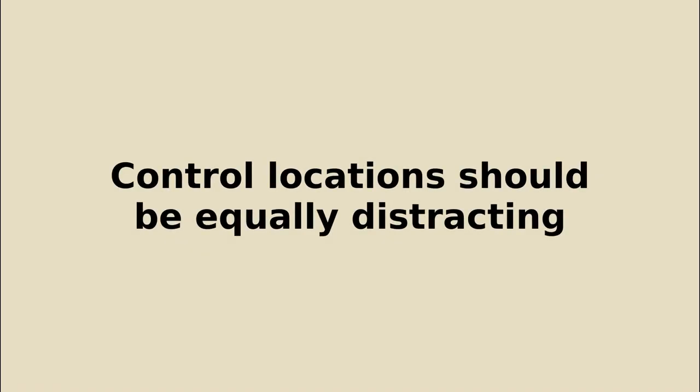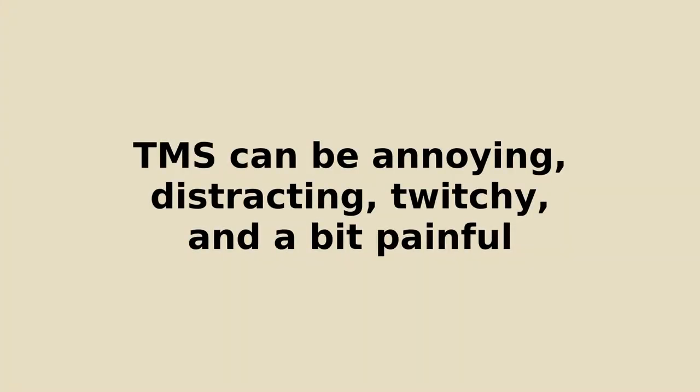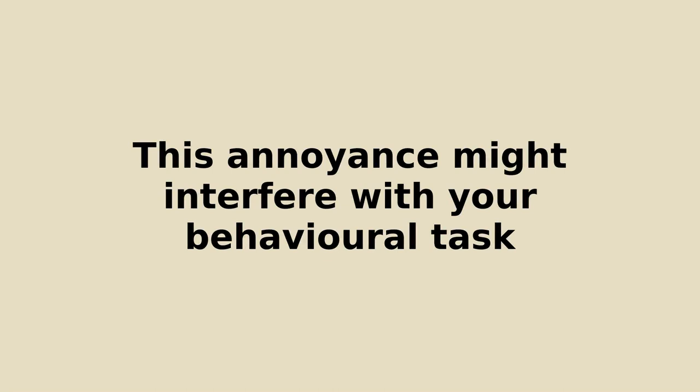Secondly and perhaps most importantly, the control TMS location really needs to be equally annoying or equally distracting and associated with the same amount of side effects as your primary TMS location. That's because we know that TMS can be annoying, occasionally it can be a bit painful, and this might interfere with the experimental task regardless of which bit of the brain is underneath.